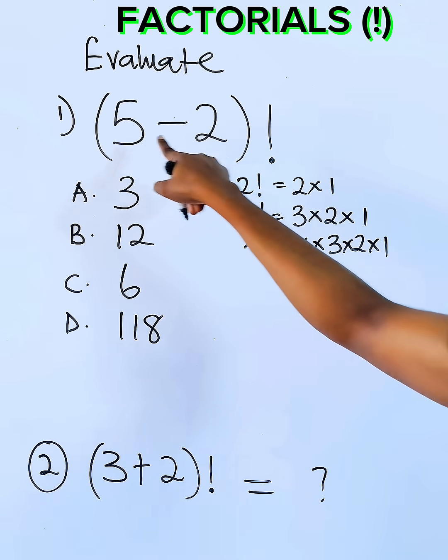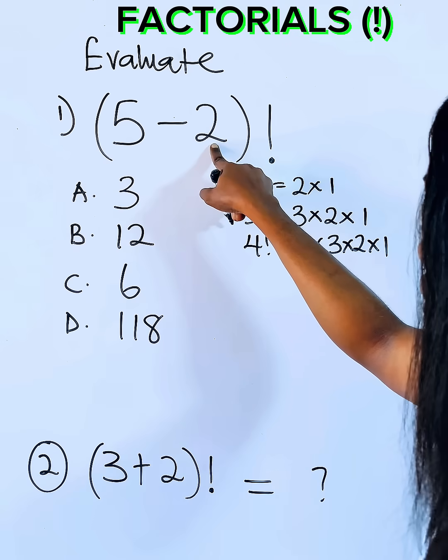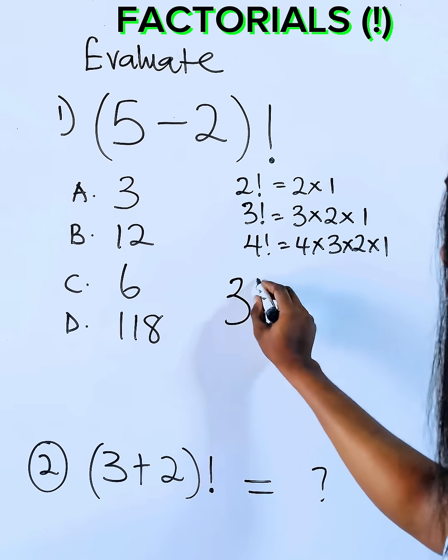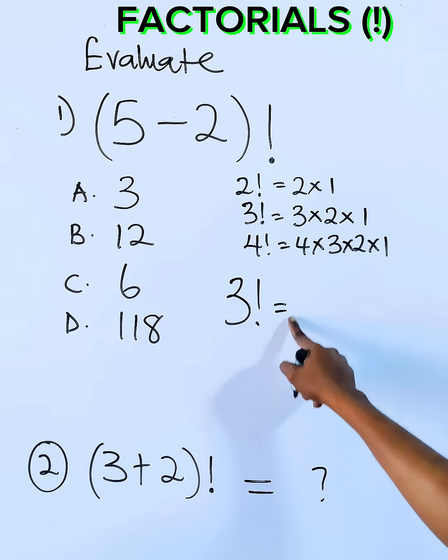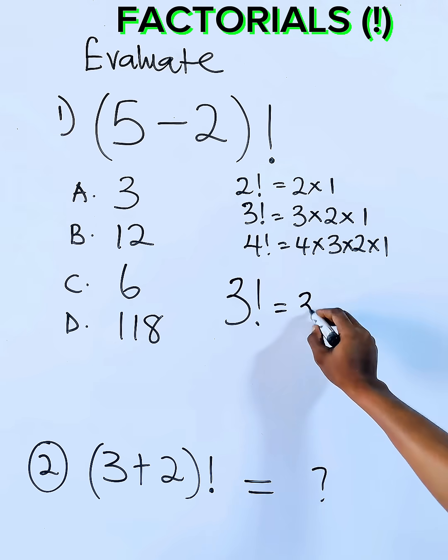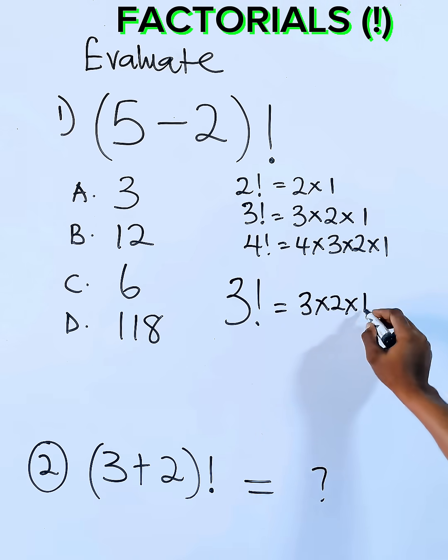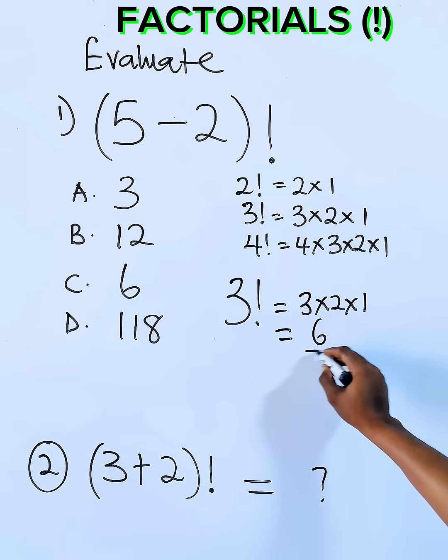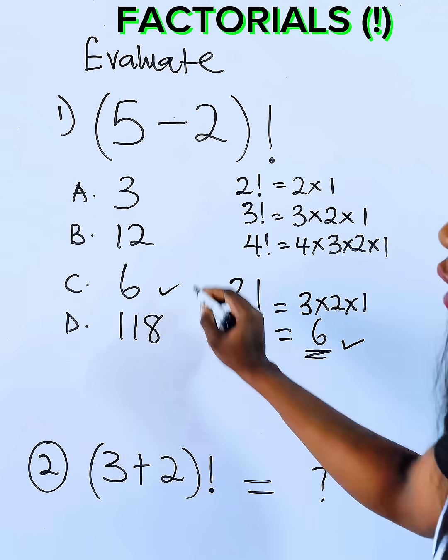So when you have this, just do five minus two. We give you three factorial. And three factorial, like we have stated, is three times two times one. And when you multiply it, it gives you six, and that is option C.